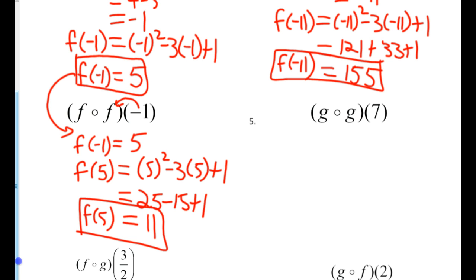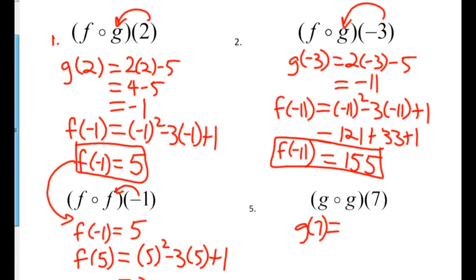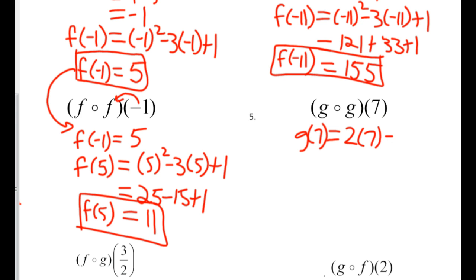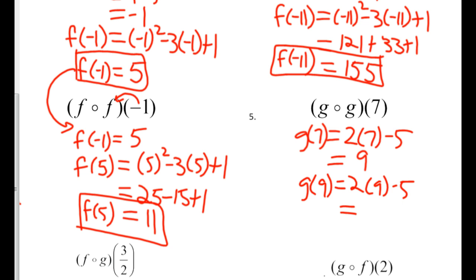Let's do G∘G of 7. G of 7 — the G equation is 2x minus 5 — so 2 times 7 minus 5, that's 14 minus 5 is 9. Now I'm going to take that 9 and plug it into the G equation again: 2 times 9 minus 5 is 13. Final answer: 13.